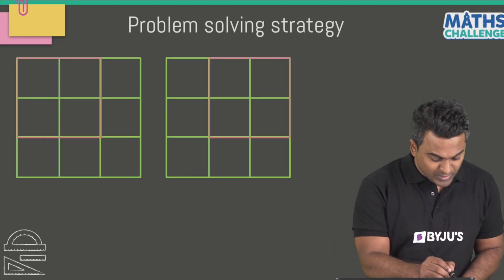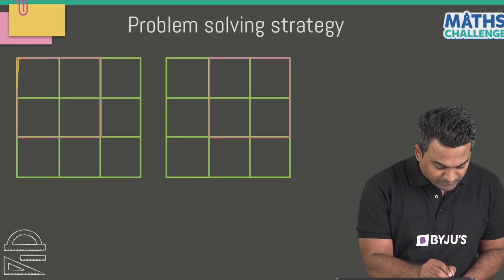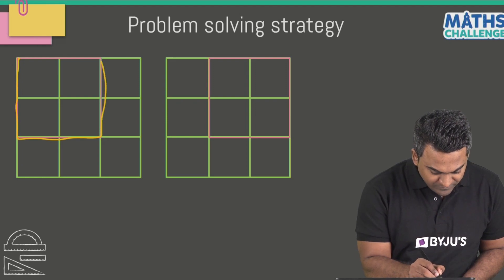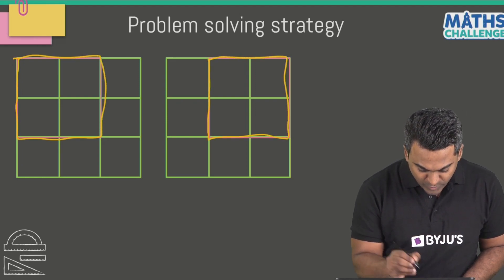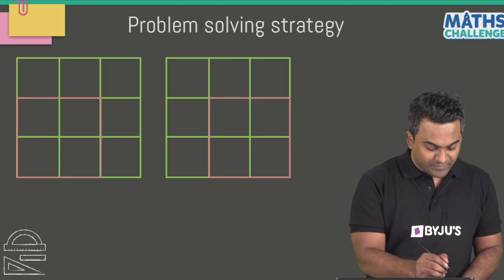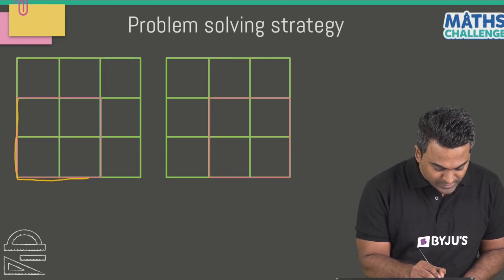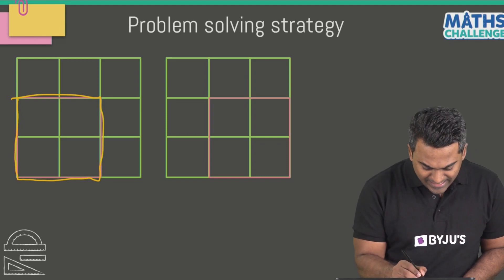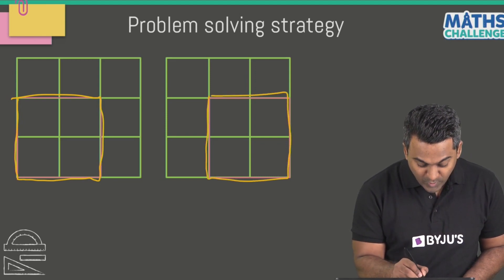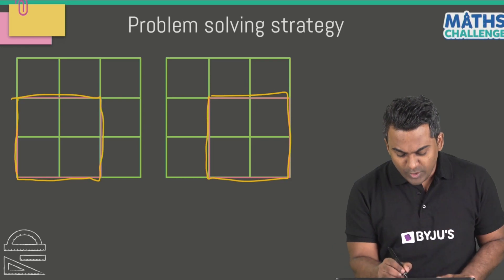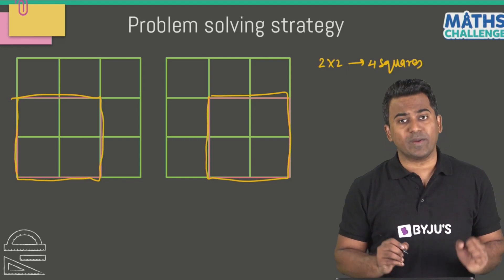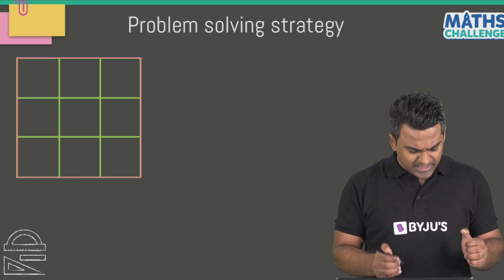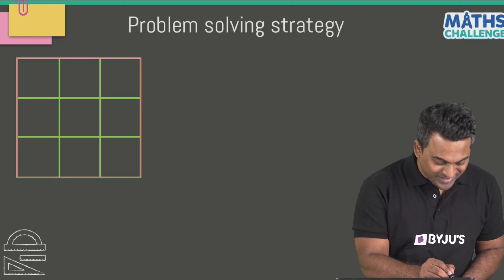Now let's count the 2 by 2 squares in the 3 by 3 grid. This highlighted one here is the first 2 by 2 square, this is the second 2 by 2 square, this is the third one, and this right here is the fourth 2 by 2 square. So there are 4 such 2 by 2 squares.